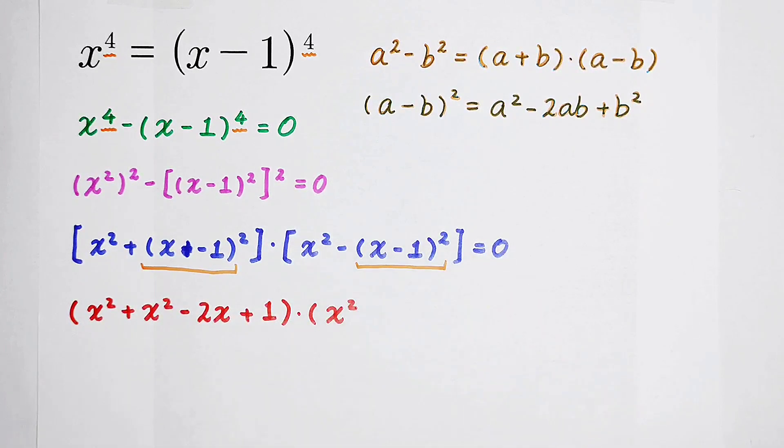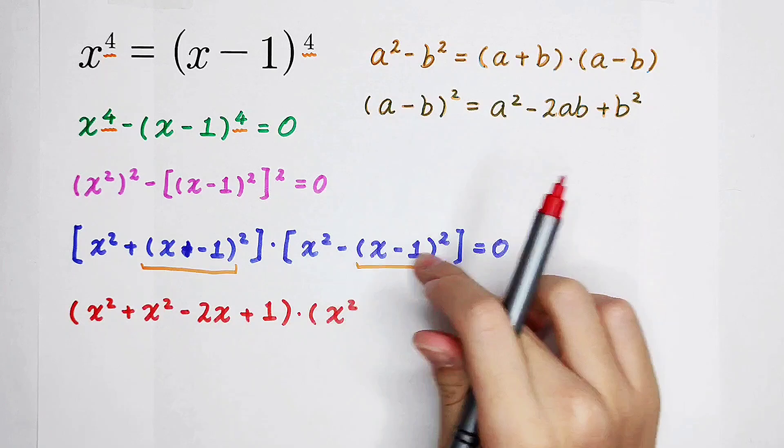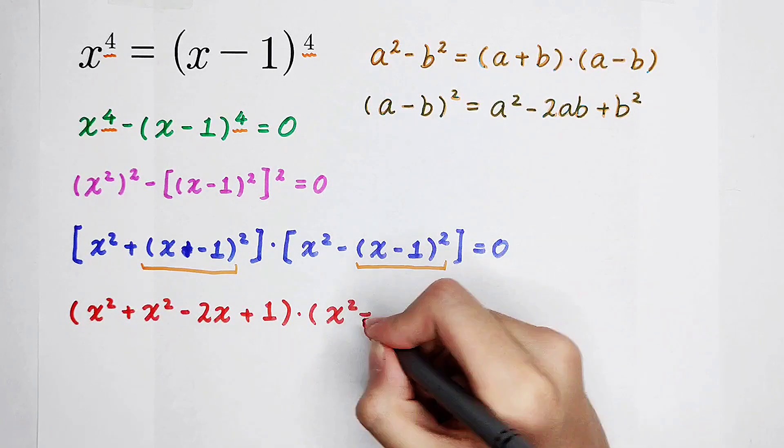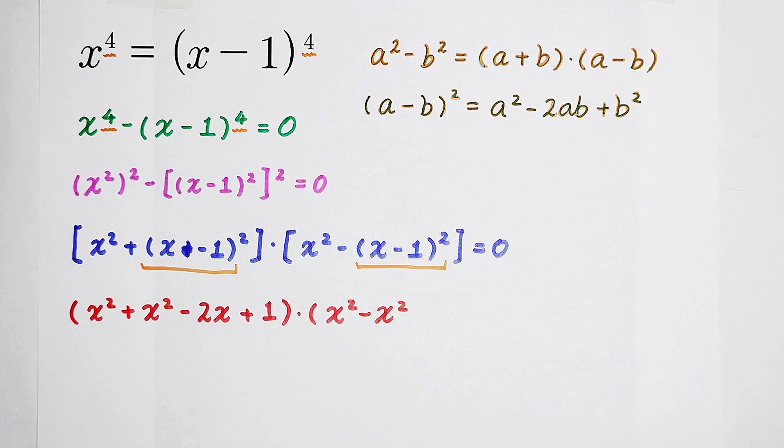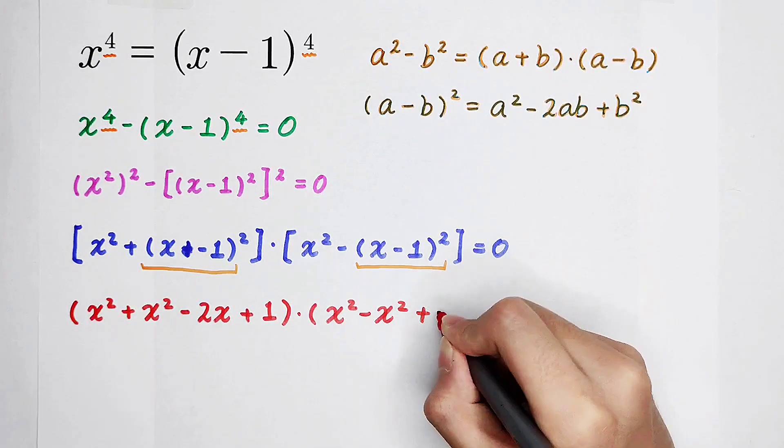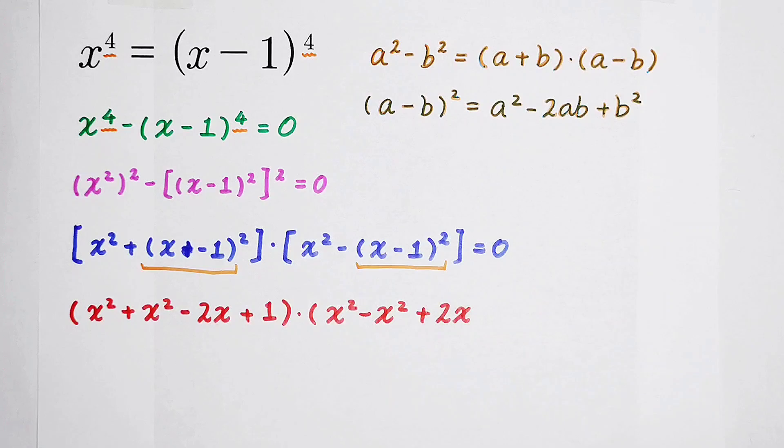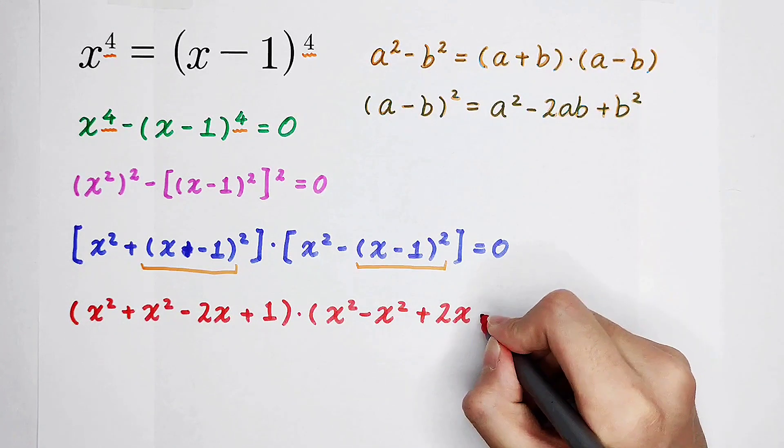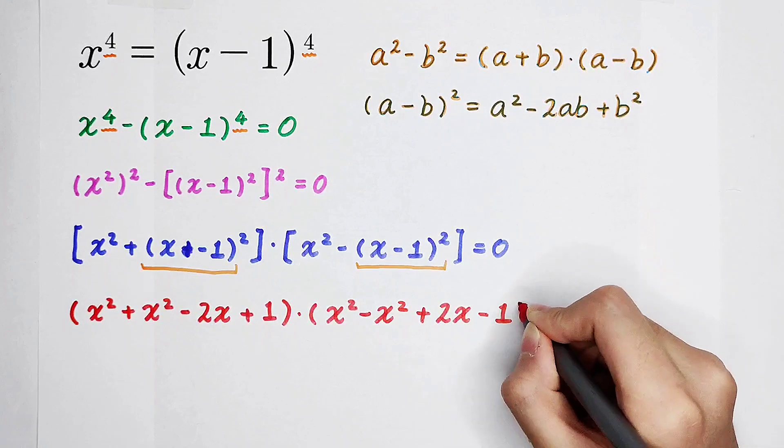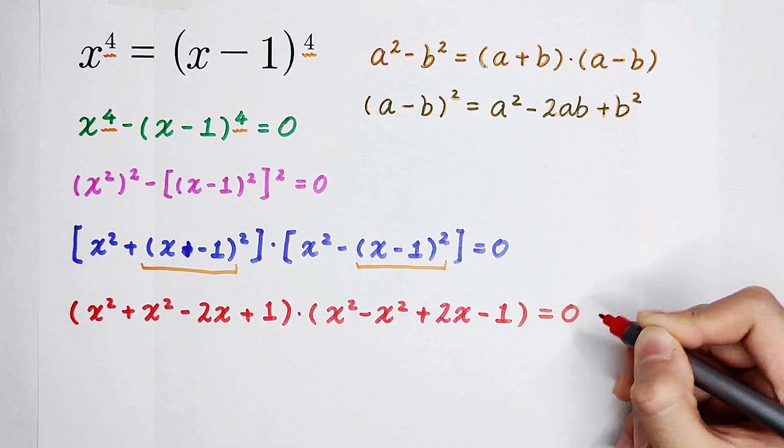In this bracket, you have to pay attention. x squared, because here is a negative sign. So, this is minus x squared and then you should add 2x because this sign should be changed to plus, and then minus 1 is equal to 0.